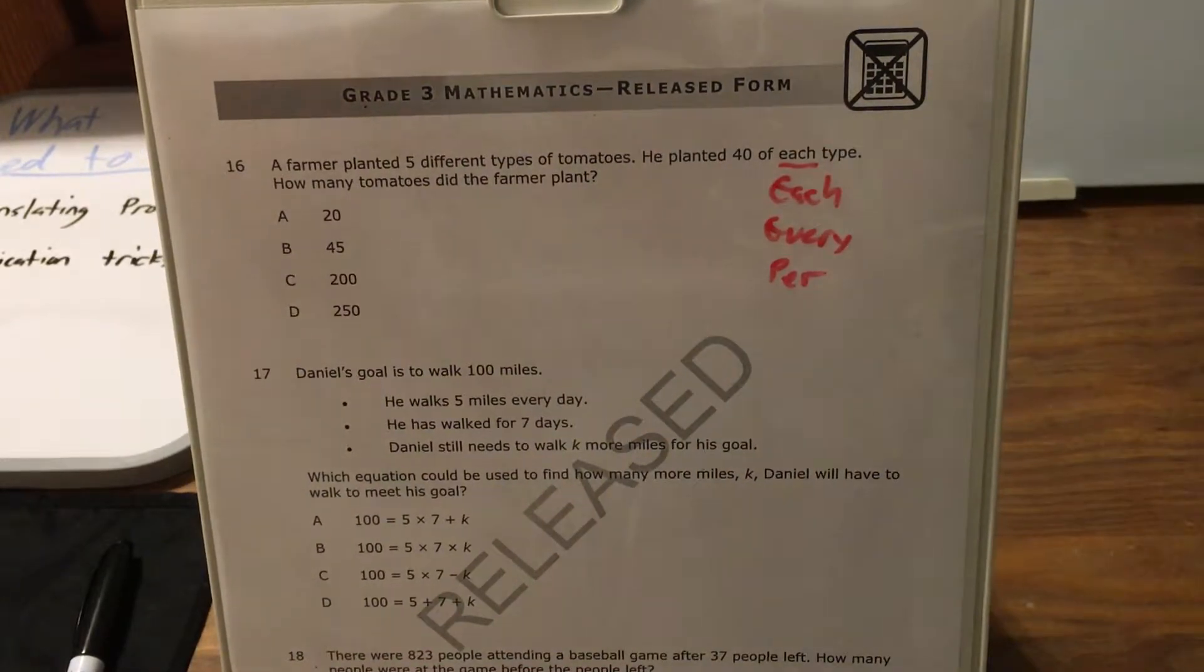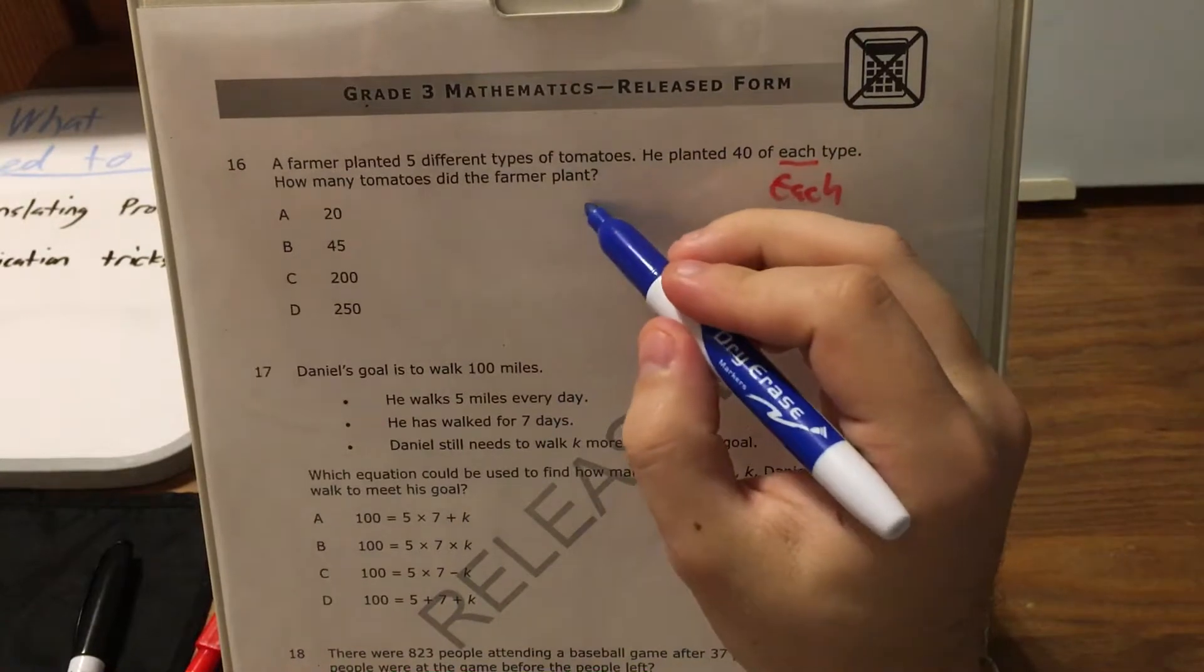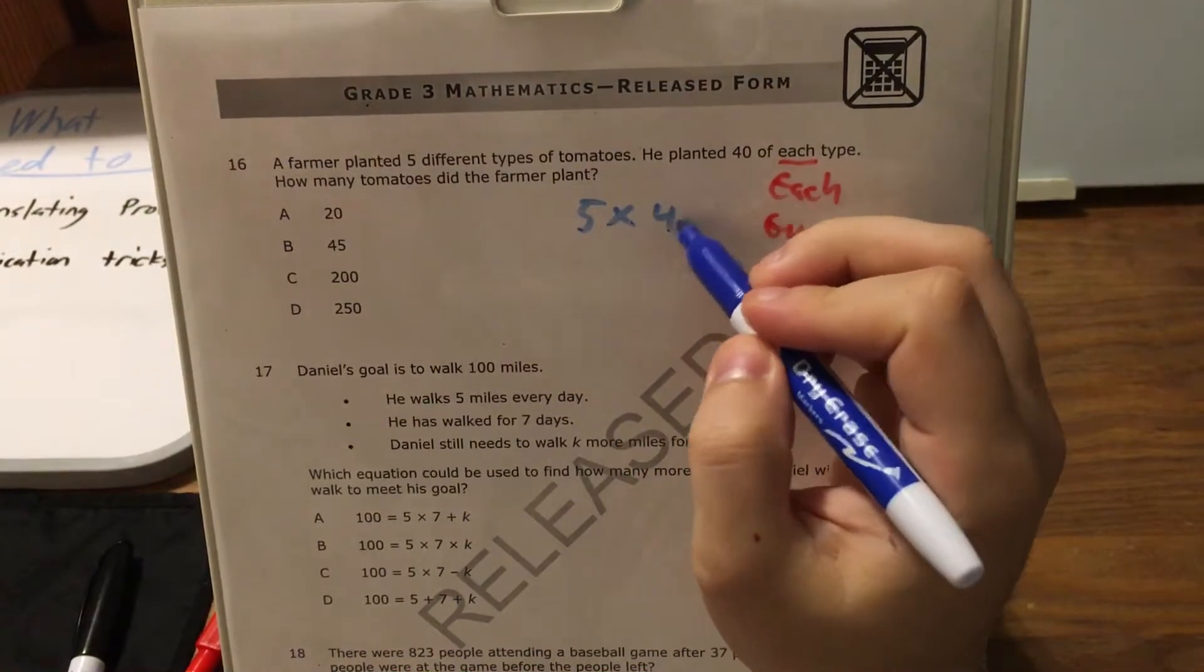like five miles per hour, these are all indicators that we're going to end up multiplying. So that tells me that I'm going to need five times 40.